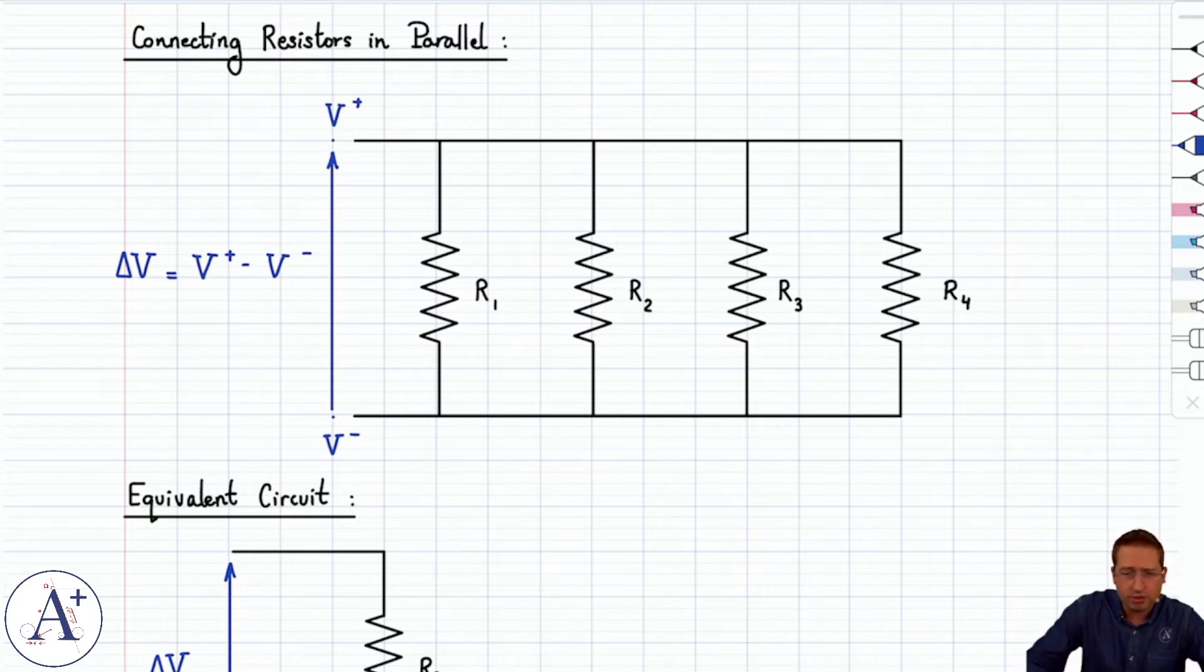So we'll take four resistors R1, R2, R3, and R4, and we will connect them in parallel across a given voltage, delta V. Maybe that comes from a battery or something, but we're not worried where delta V comes from. What we're worried about is taking our resistors and connecting them all in the same way across this voltage.